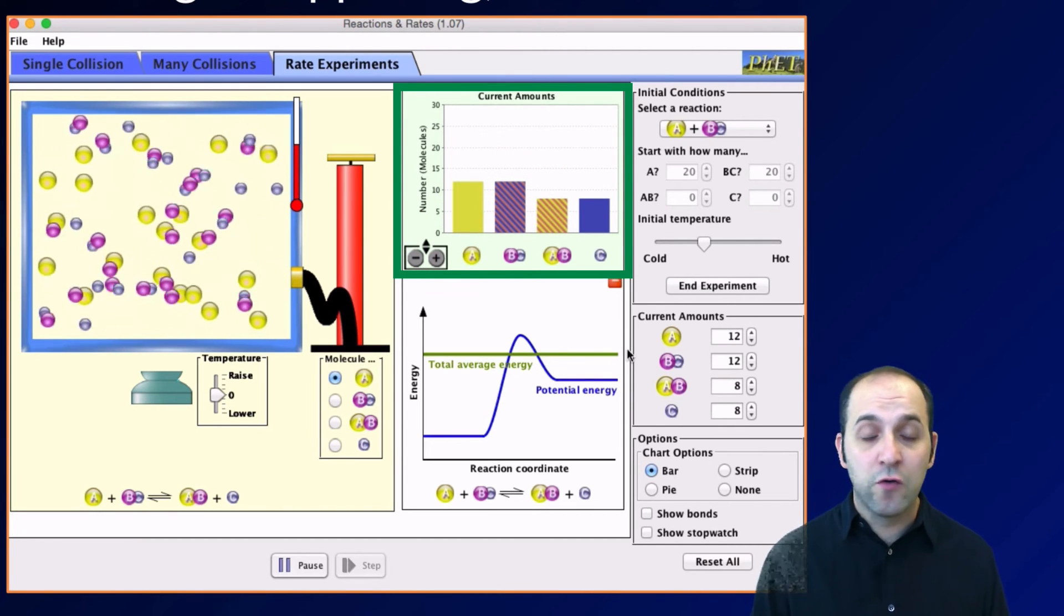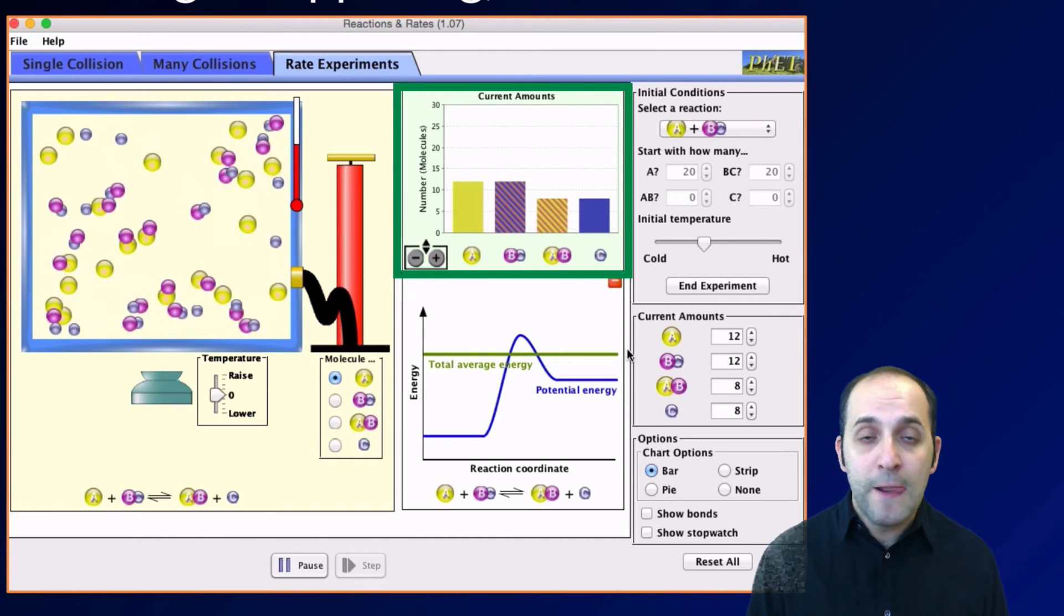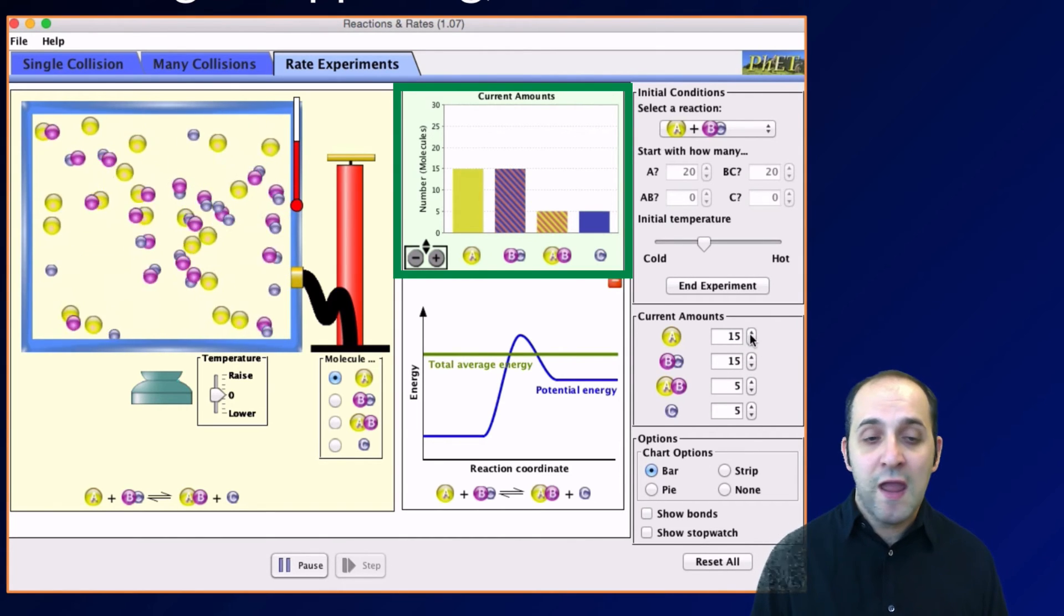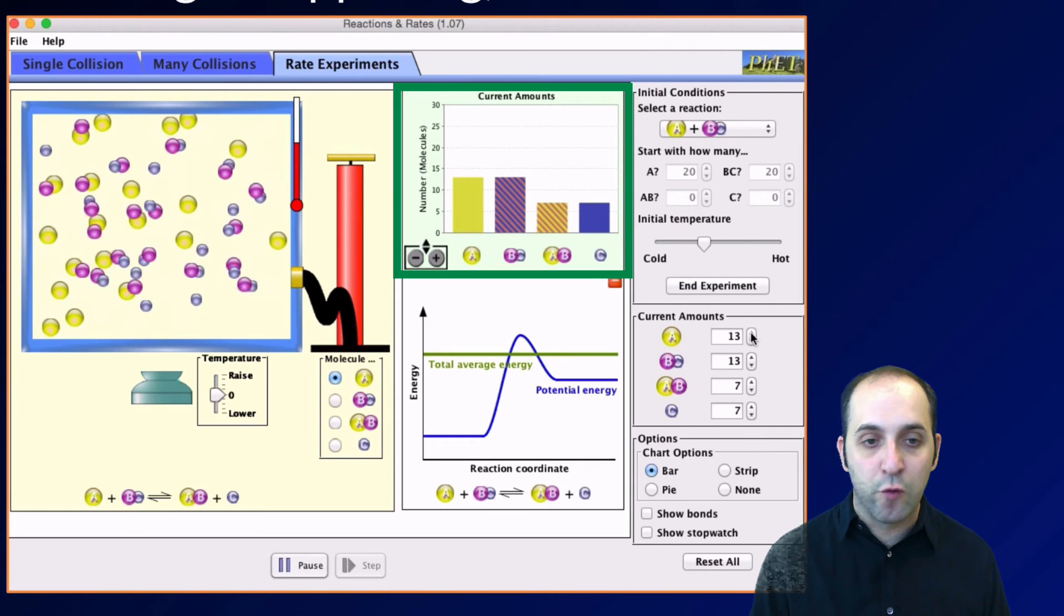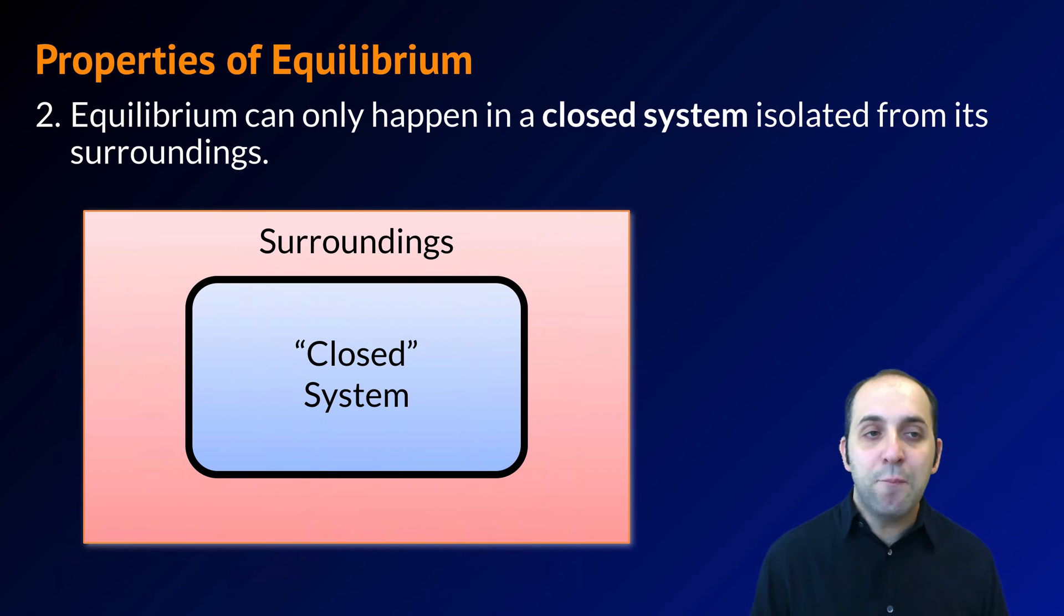The reason you see this fluctuation is because we're only looking at 40 molecules. If we're looking at four moles of molecules, you wouldn't see any fluctuation at all. It would be too small to be able to measure in any meaningful way, and it would just seem like the quantities of substances were remaining the same in each case.